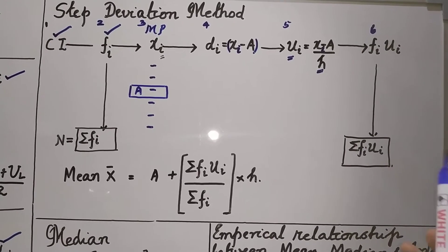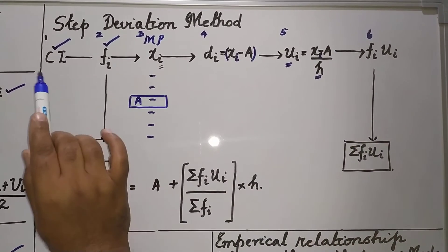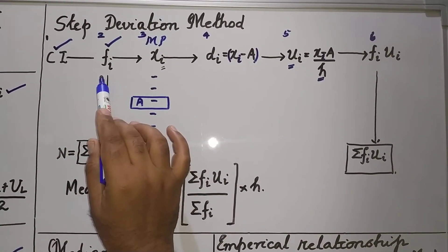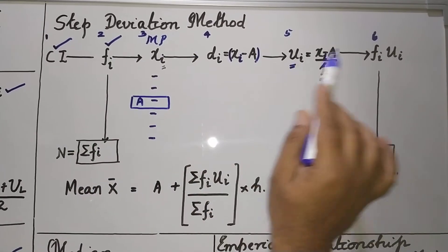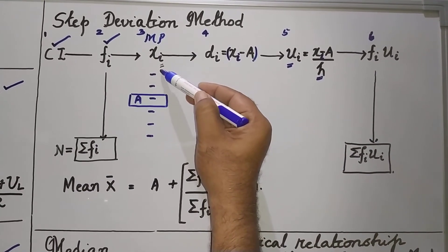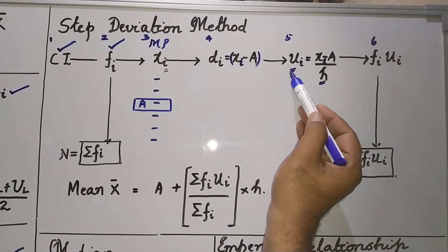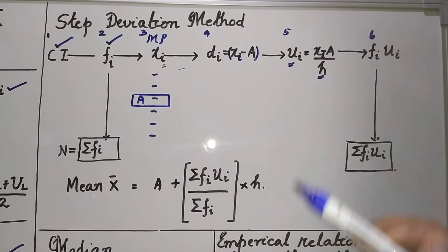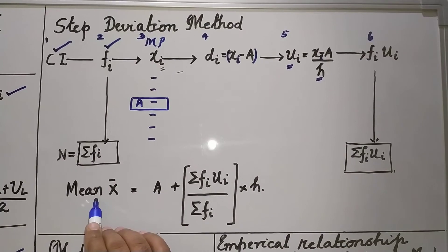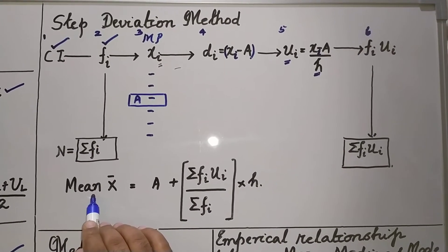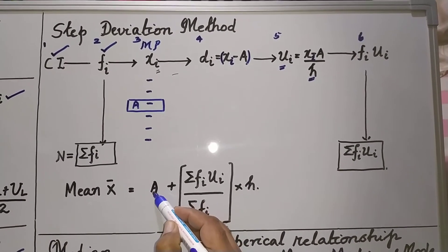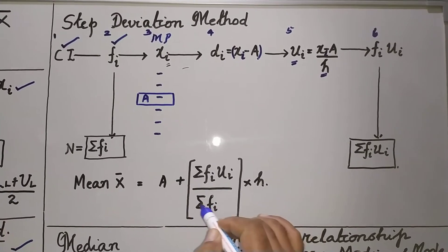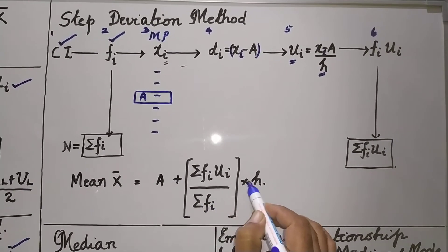In the step deviation method, two columns will be given to you: class interval and frequency. The remaining four — the midpoint, deviation, step deviation, and the product of frequency and step deviation — will be your part. And the mean is calculated by: mean x bar is equal to assumed mean plus sigma fi ui divided by sigma fi, into H.